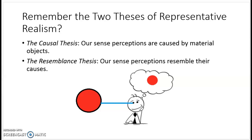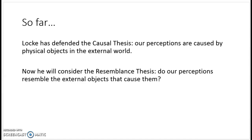We're going to continue our discussion of John Locke. In order to set the stage, I want to remind you of the two theses, the two claims of representative realism. First, there's the causal thesis. The causal thesis says that our sense perceptions are caused by material objects. John Locke has said yes, that's absolutely true — our sense perceptions are caused by something outside of our minds. What's left is the resemblance thesis: to what extent do our sense perceptions resemble the objects that cause them? That's what Locke is going to talk about now.